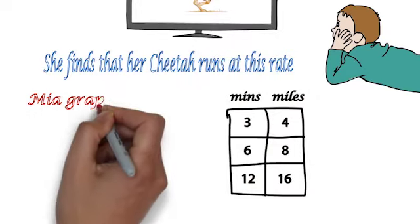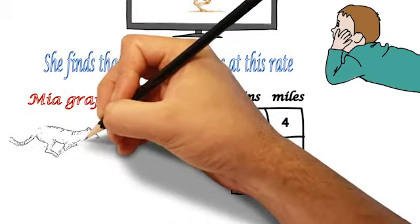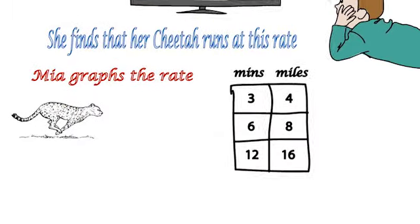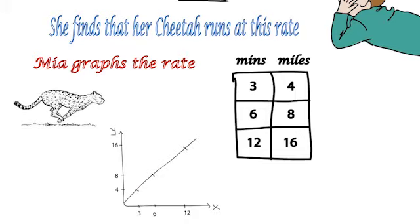So Mia graphs the rate, and you can see in three minutes the cheetah runs four miles. In six minutes they run eight miles, and in twelve minutes she runs sixteen miles.